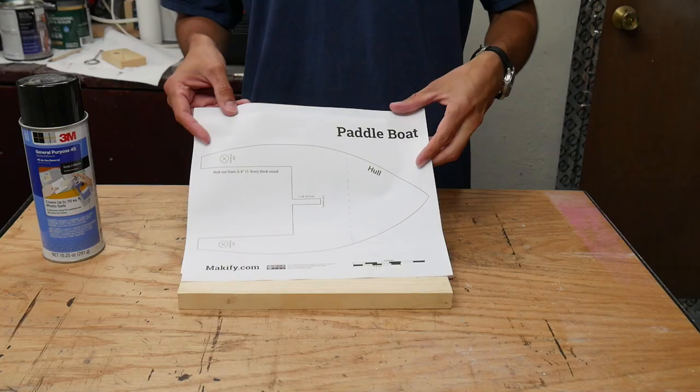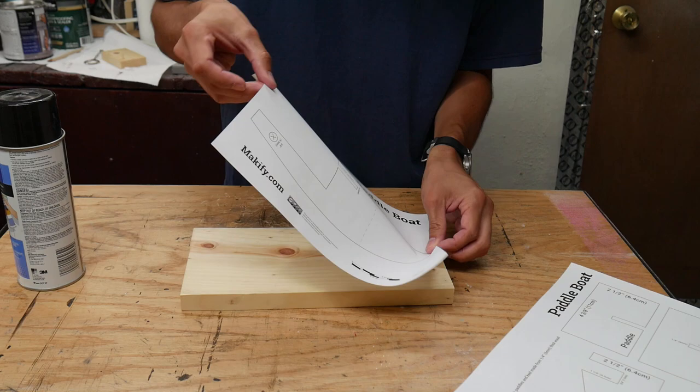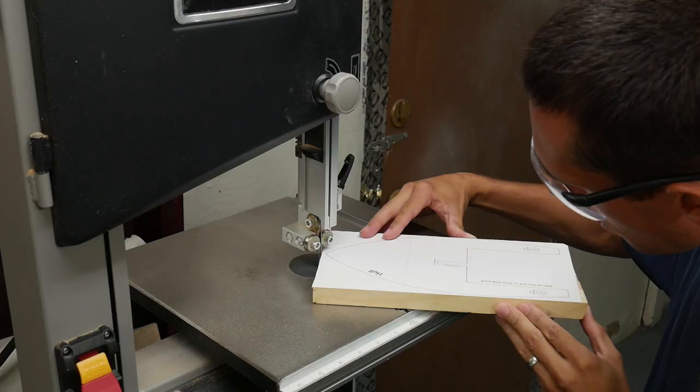I made a template on the computer and used spray adhesive to stick the template of the hull to the large piece of wood. Then I cut out the hull with my bandsaw.